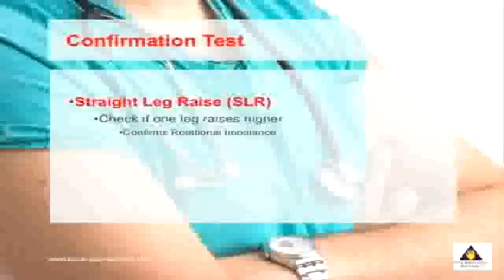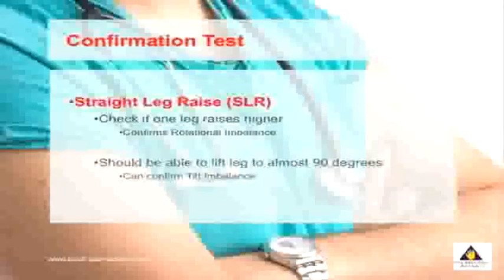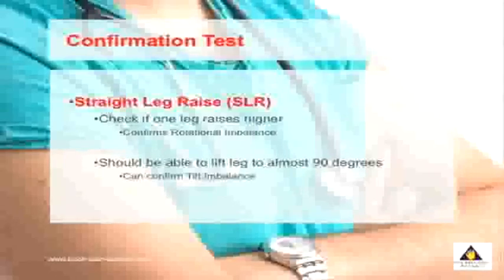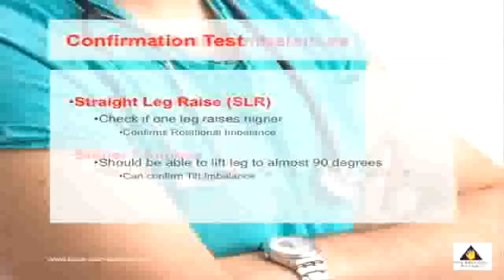There are two things you will note. First, you may find that you can lift one leg higher than the other — if this is the case, it confirms that you have a rotational imbalance. Secondly, people should be able to lift their leg up to almost 90 degrees. If you find that you can't lift your leg to 90 degrees and both legs are similar, then you may have tilt type imbalances.